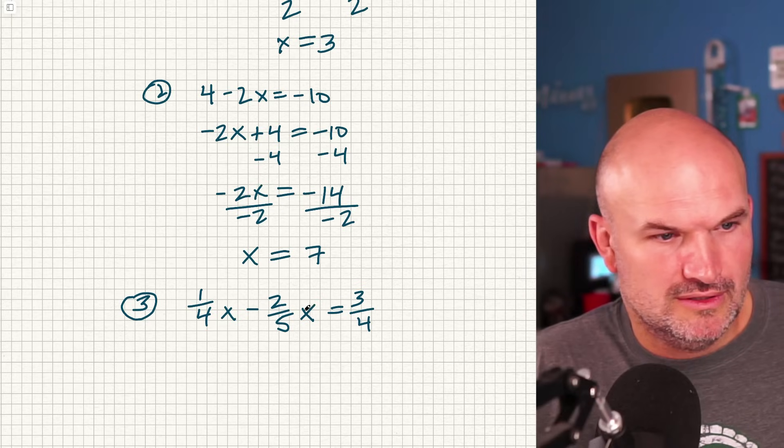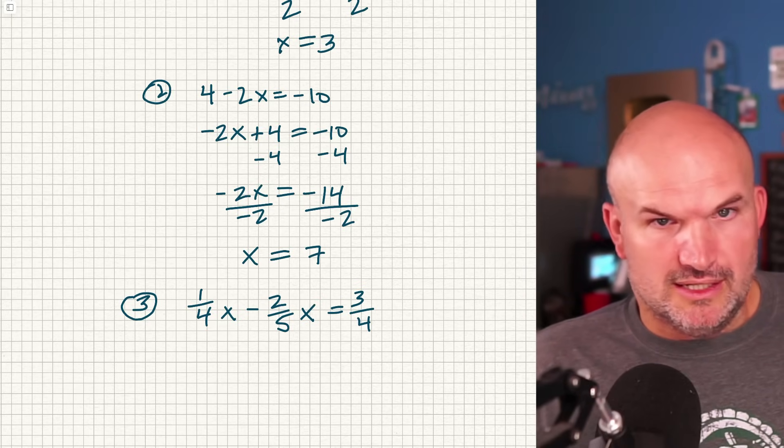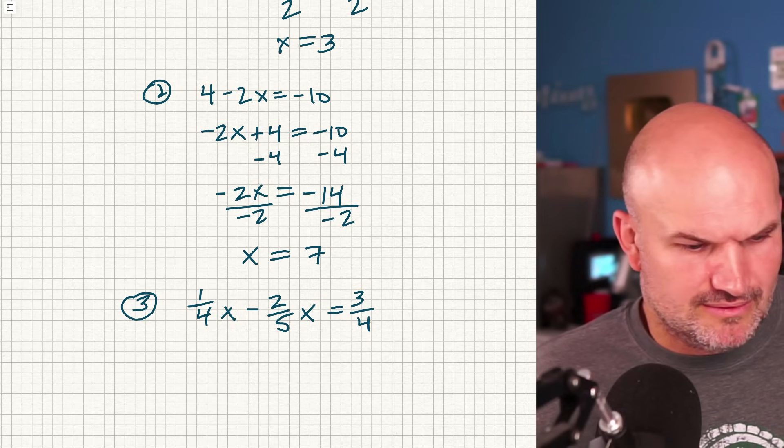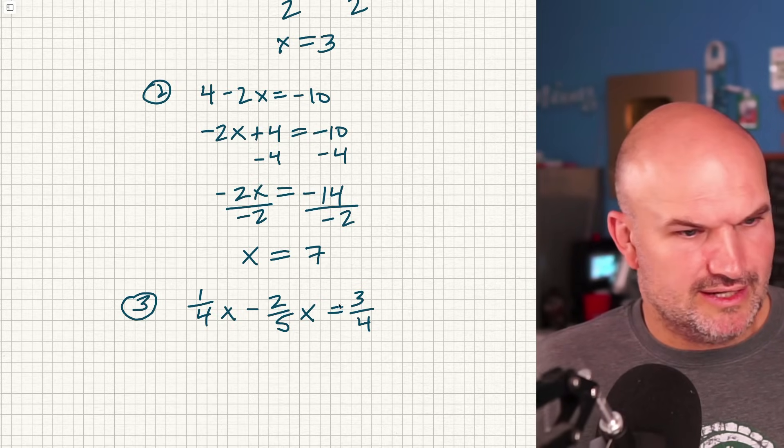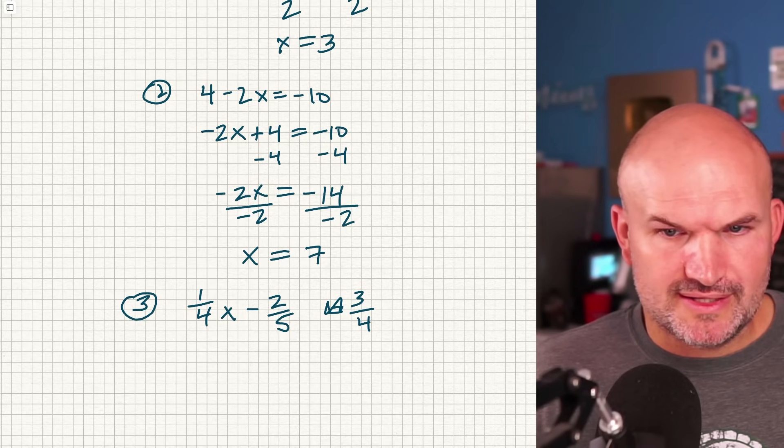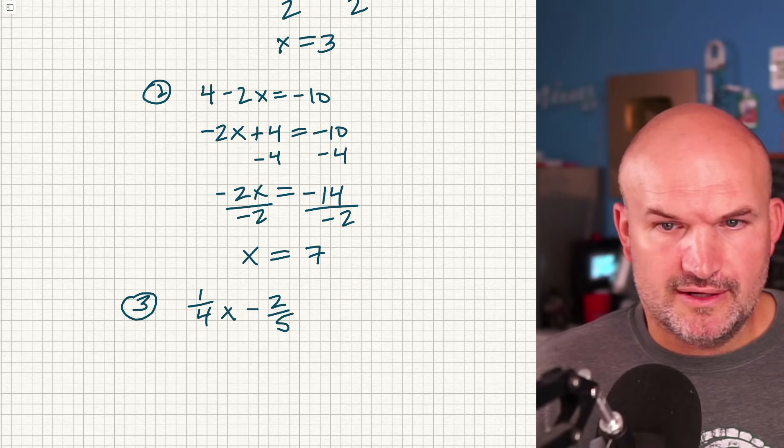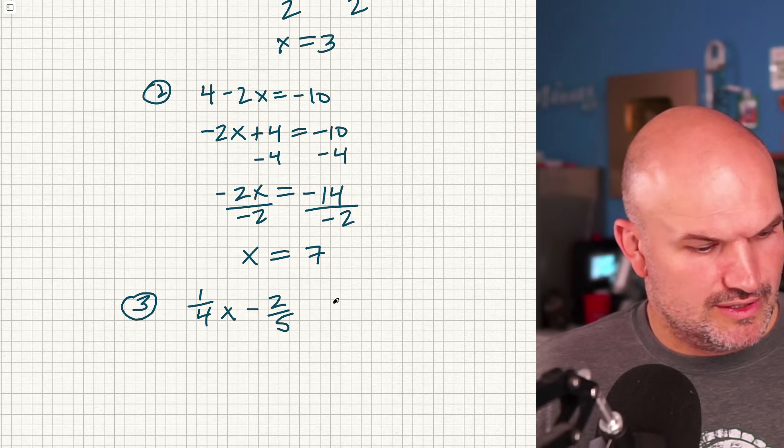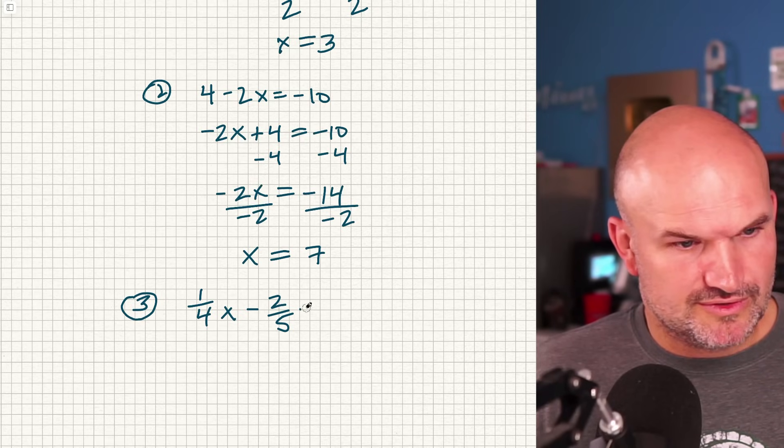Because if you're going to use this as a two-step equation, you would have to use... I don't think I added, why did I add an extra? Sorry about that. That's not supposed to be there. Let's rewrite that. Sorry. I just wrote it down wrong. (1/4)x - 2/5 = 3/4.